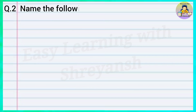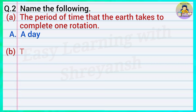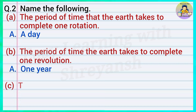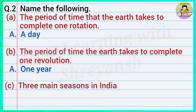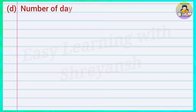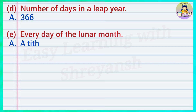Question number two: Name the following. A: The period of time that the earth takes to complete one rotation — answer: a day. B: The period of time the earth takes to complete one revolution — answer: one year. C: Three main seasons in India — answer: summer, rainy, and winter. D: Number of days in a leap year — answer: 366.